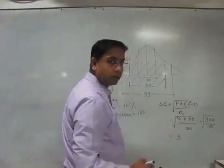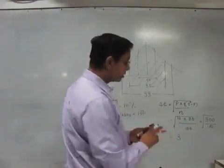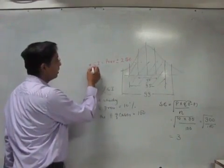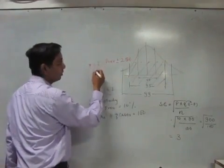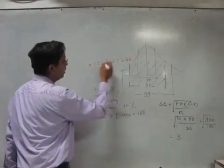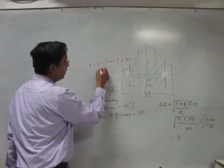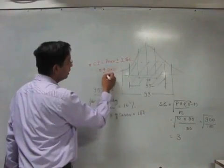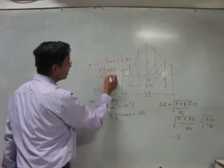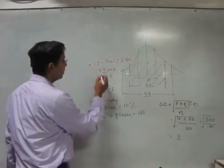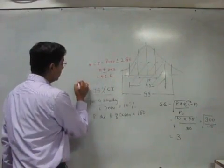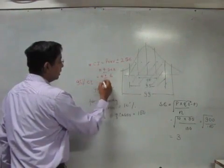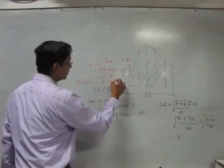So the standard error is 3. Therefore the 95% confidence interval is given by: 10 ± (2 × 3) = 10 ± 6. That gives a 95% confidence interval of 4 to 16. So the answer to MCQ number 1 is that the 95% confidence interval is 4 to 16.